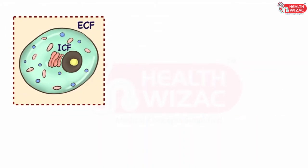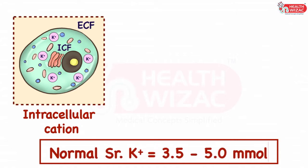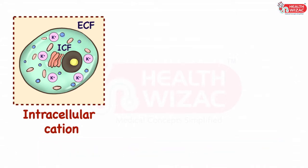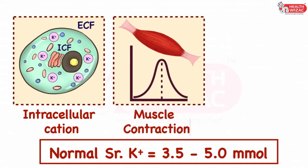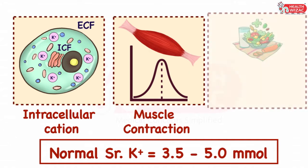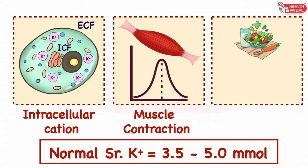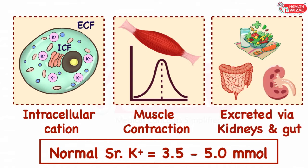Potassium is a very important intracellular cation with a normal value of 3.5 to 5 millimoles, majority of which is present inside the muscles. It plays a very important role in the generation of action potential responsible for muscular contractions. Its regulation is done inside the body through dietary intake, while excretion is done primarily through kidneys and in some amount via stools.